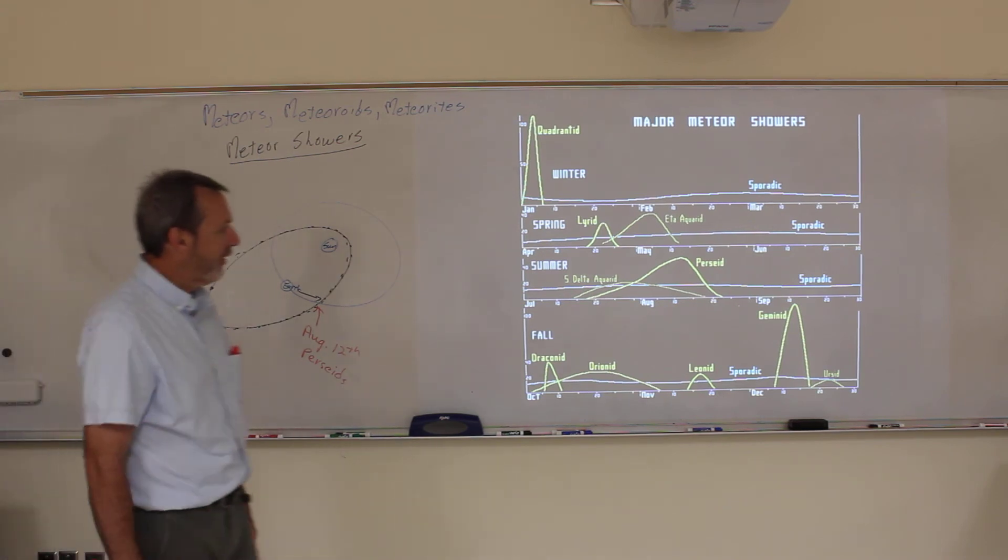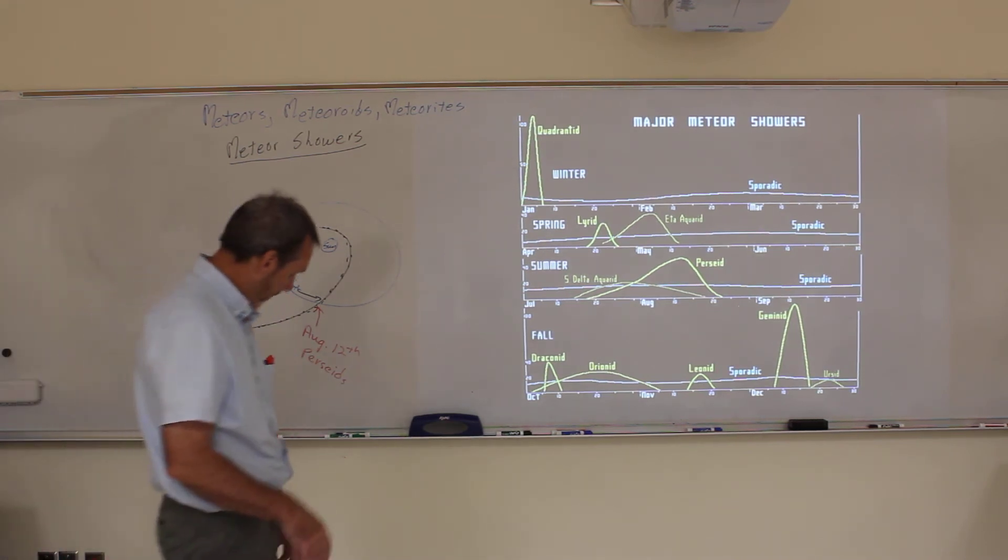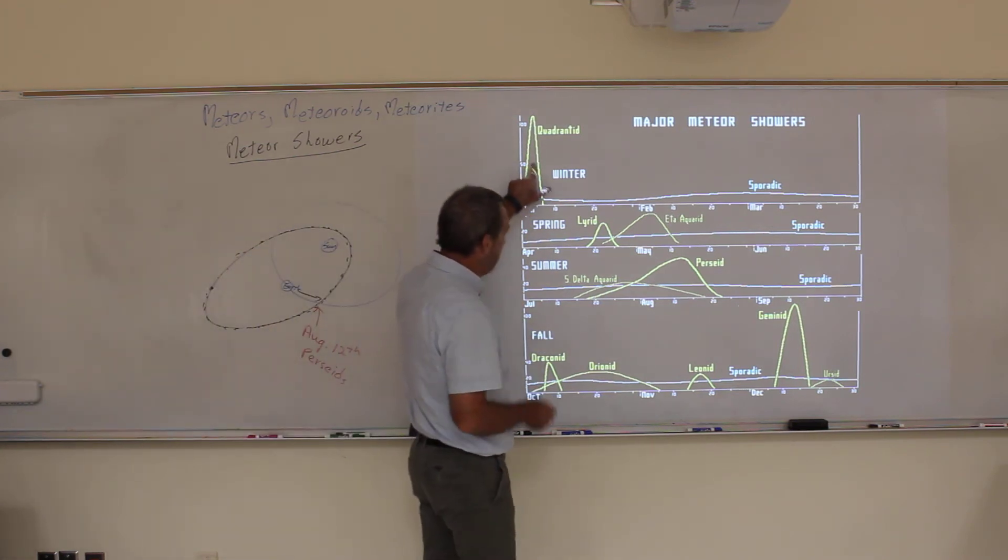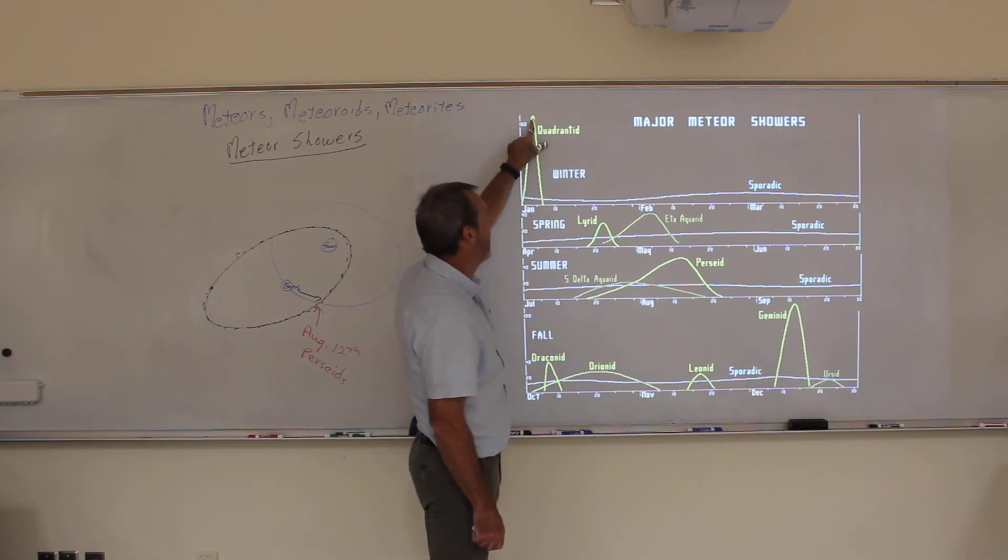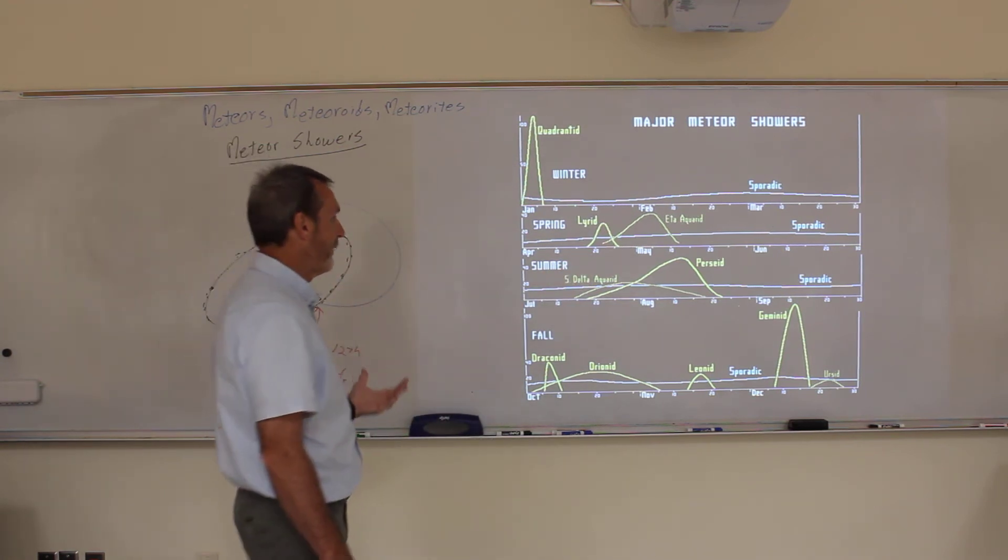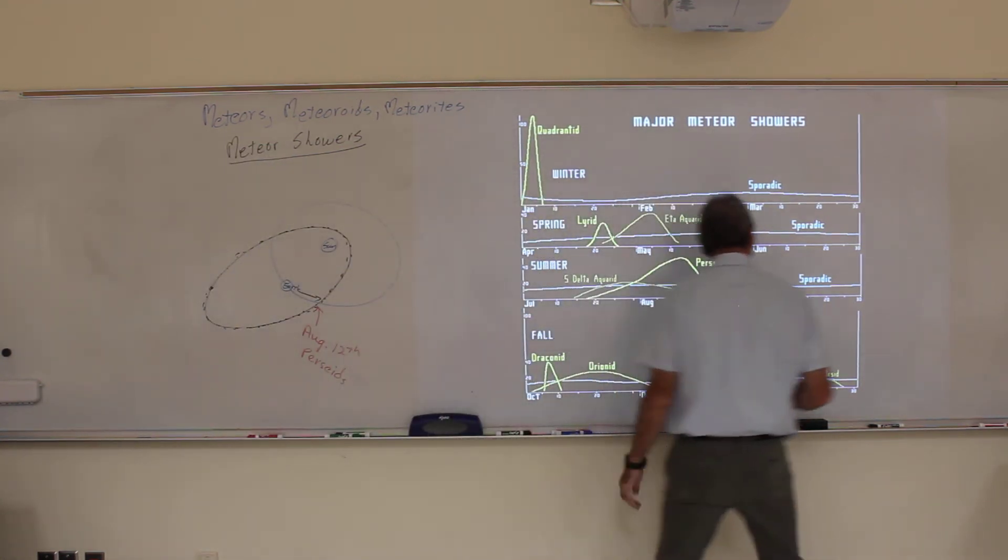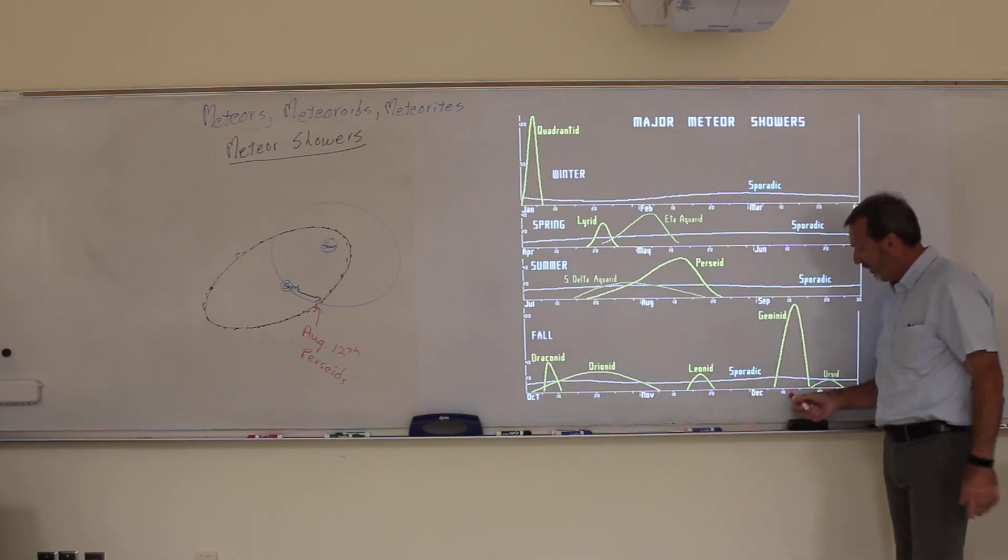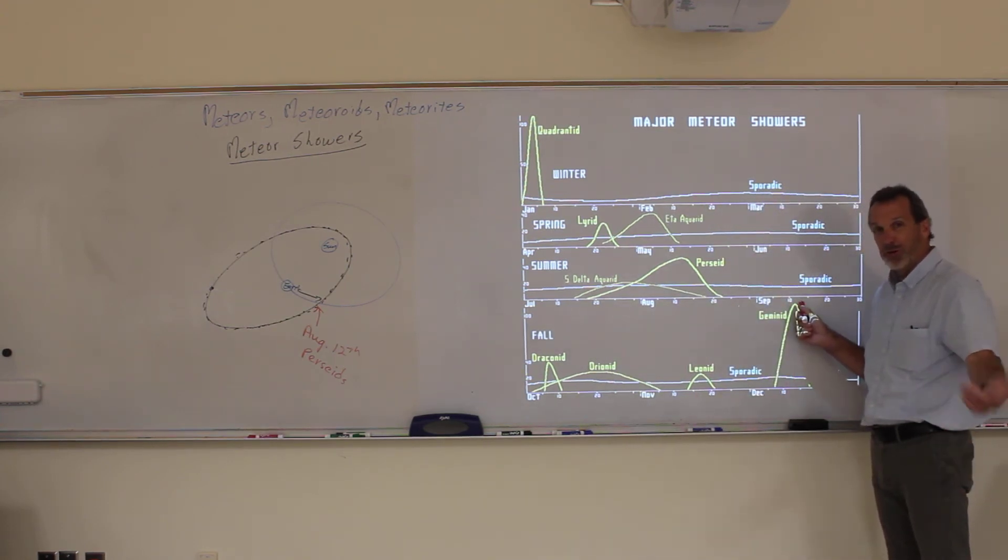Alright, this is the Perseid meteor shower. The radiant is right here in the constellation of Perseus. And that's what we named the shower after is what constellation the radiant seems to be in. And this is a chart of the known meteor showers that happen every year. If you look here, the best ones are actually in the winter. The Quadrantid, which is way up here, it's 100 and something, this is per hour. So it's about 120 per hour. Which means you're seeing about two meteors per minute. Which is really good.